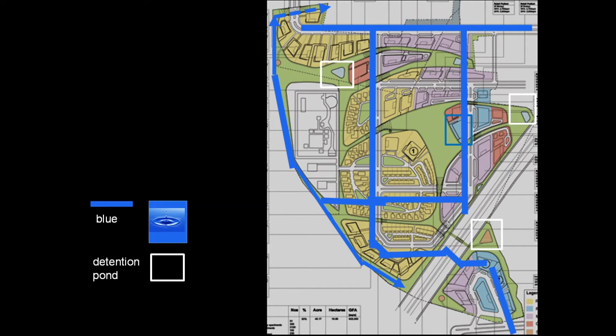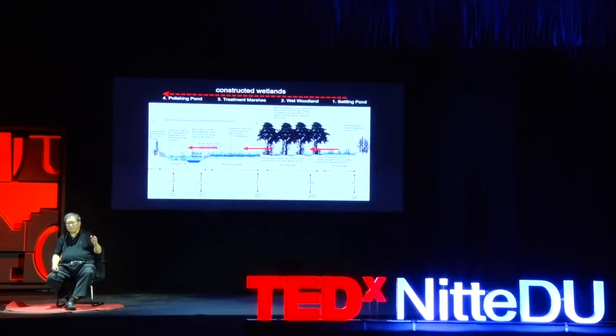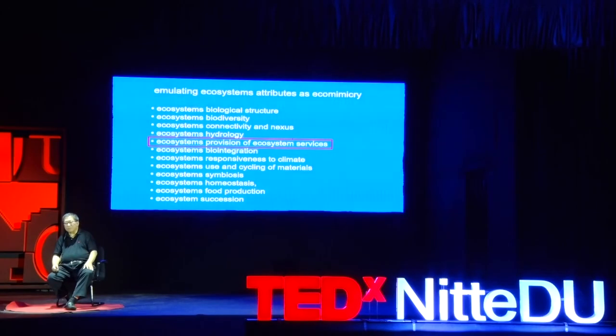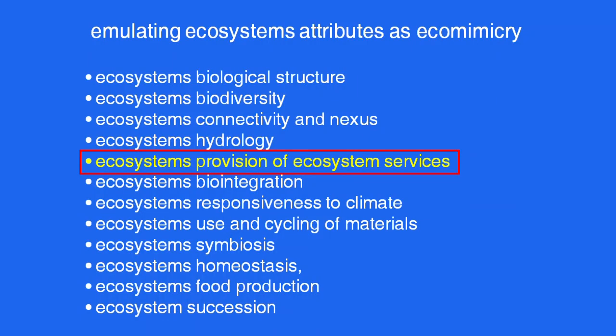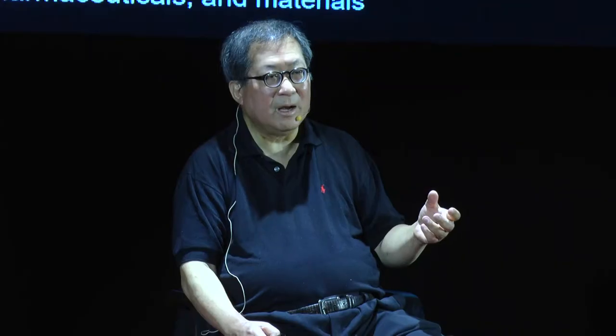The next attribute is the provision of ecosystem services — what nature does for us, for free, without human intervention, like photosynthesis and the sequestering of contaminated gases. This is so complex that it is virtually impossible for technology to imitate or emulate it. With ongoing deforestation, we are daily losing the planet's capacity to provide ecosystem services. The approach is therefore to augment built systems with biotic constituents.